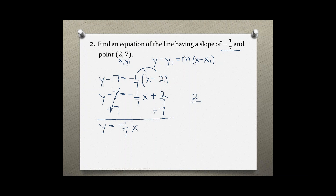For this step we should do a little side work — you can also use a calculator, but remember to convert the result back into a fraction. When adding two fractions, we write 7 as 7 over 1, then find the common denominator of 7. Multiplying numerator and denominator by 7 gives us 49 over 7. Now we add the numerators to get 51 over 7.